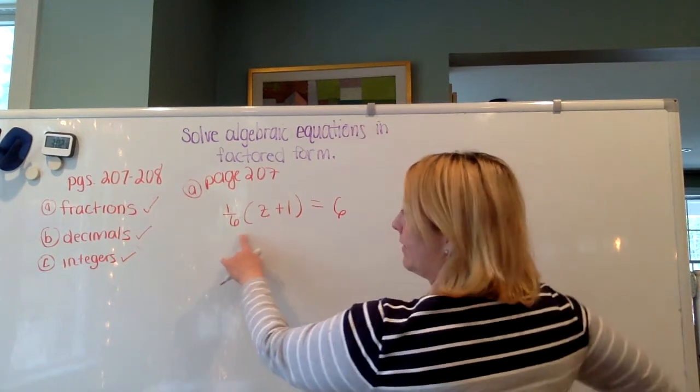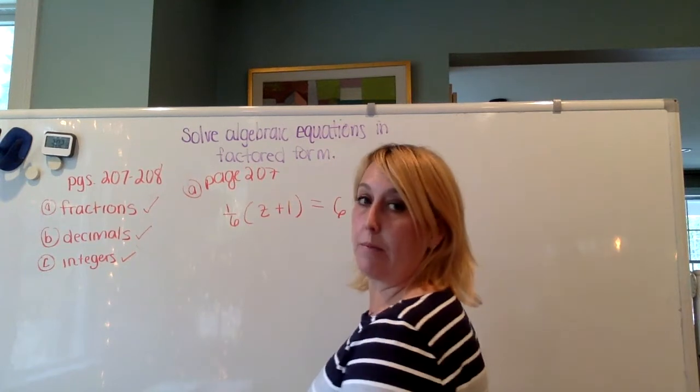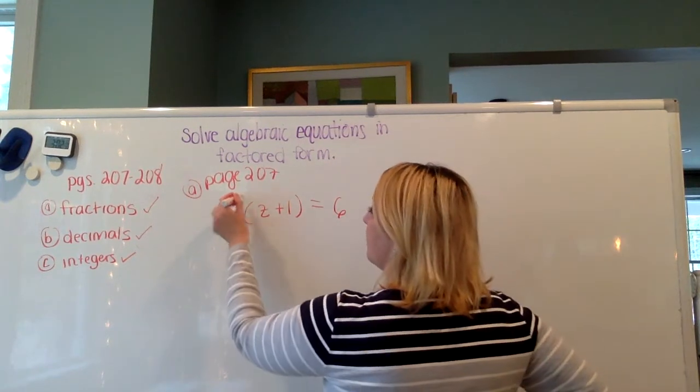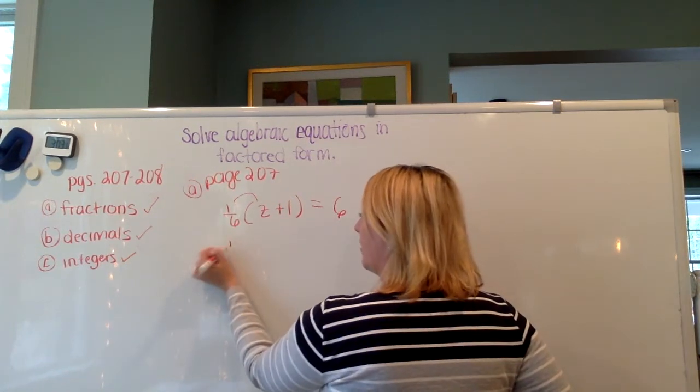So I have one-sixth times z plus 1 in the parentheses equals 6. So remember, the first step is to distribute the number or the term outside of the parentheses to the terms inside the parentheses.